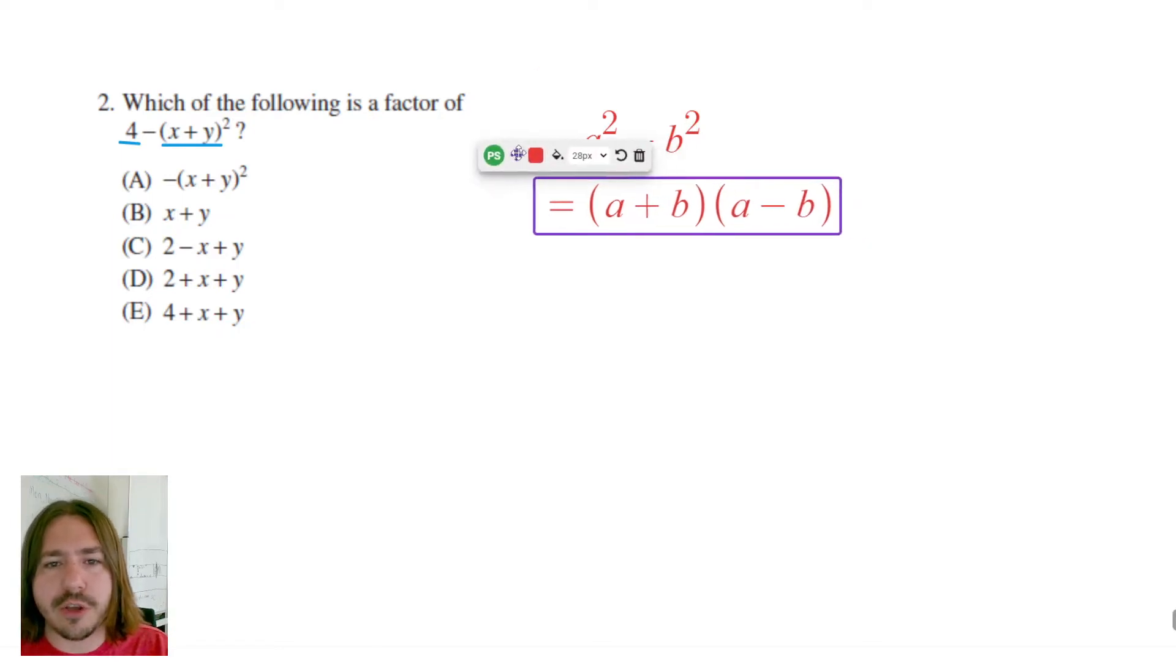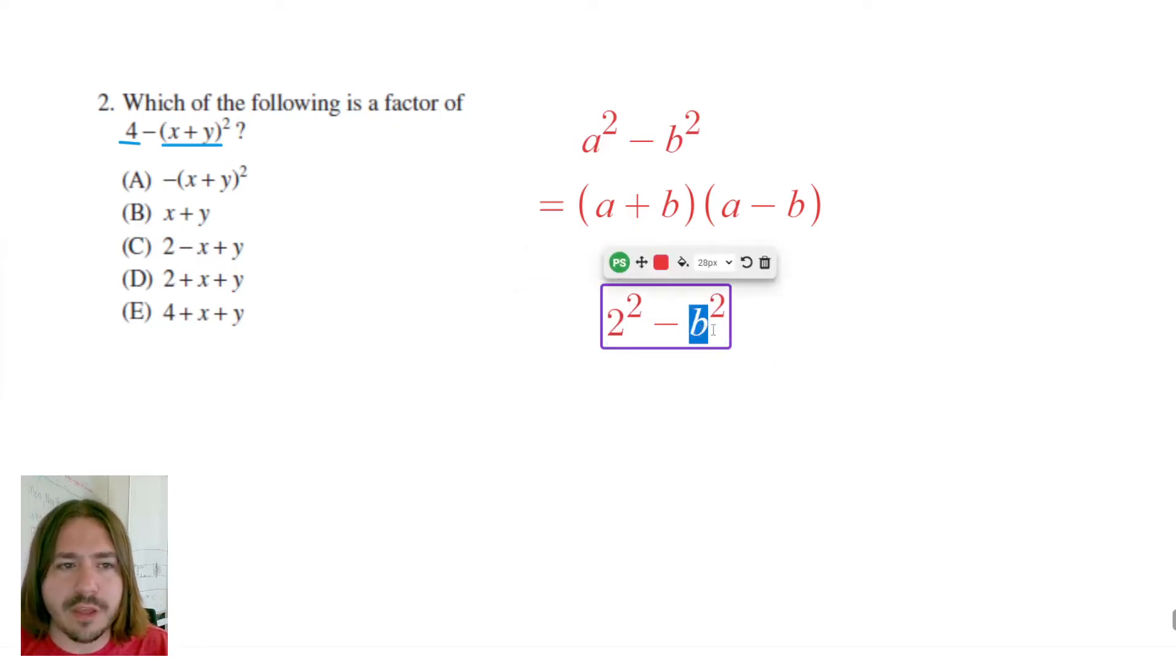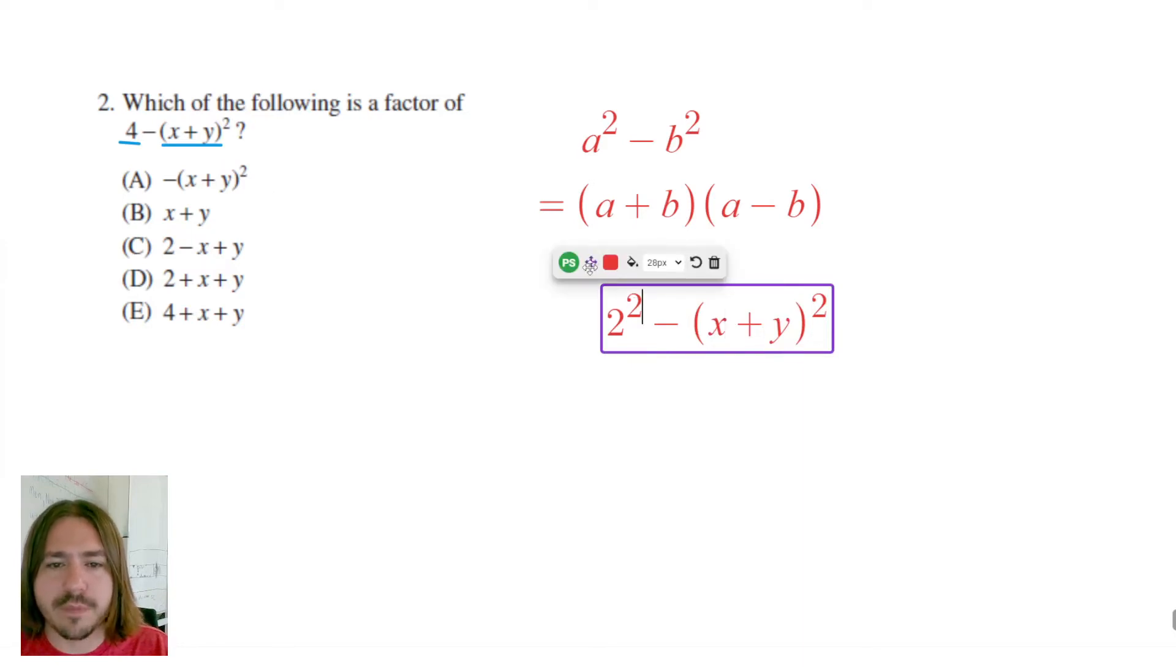So what's a and what's b in this case? Well a would be 2 because 2² is 4, and b would be the (x+y). So we have 2² which is 4 minus (x+y)².